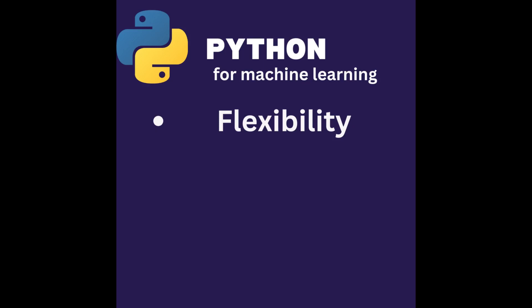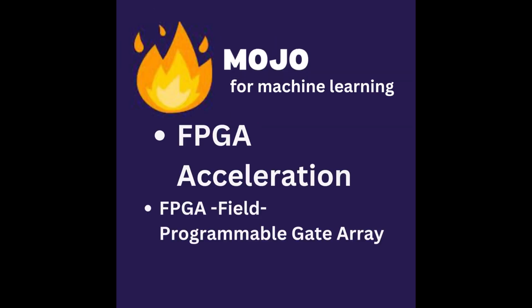So these are the basic features of Python programming. Now let's look at Mojo for machine learning. As mentioned, Python and Mojo are used in different aspects. Mojo is not typically used for machine learning model development, but rather for deploying machine learning models on FPGA hardware.